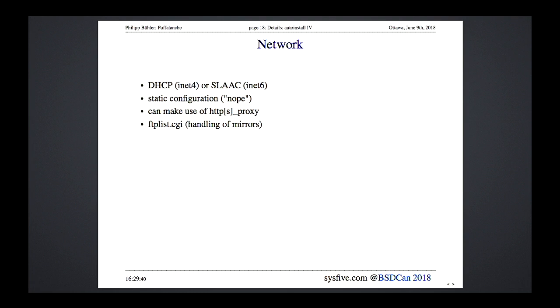Network support includes DHCP for IPv4 or SLAAC for IPv6. You can do static configuration, though I'm not a fan of it. There's also an HTTP/HTTPS proxy option, and the FTP list CGI which finds your nearest or fastest mirror.